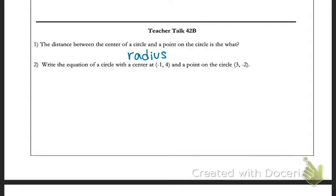For part 2, it says to write the equation of a circle with the center of negative 1, 4 and a point on the circle of 3, negative 2. I went ahead and just drew a really quick picture.